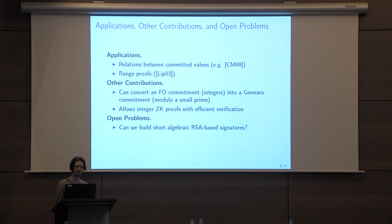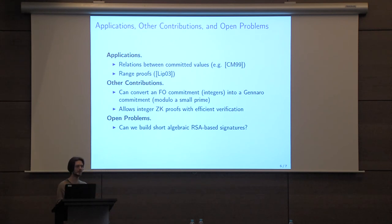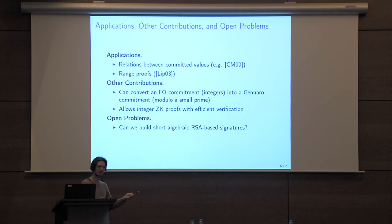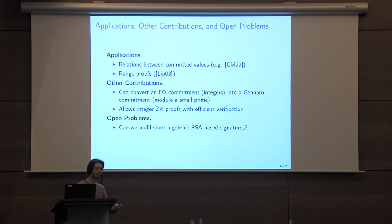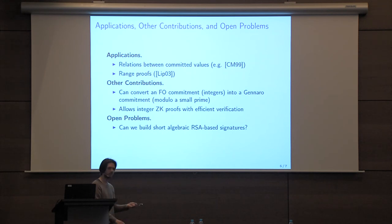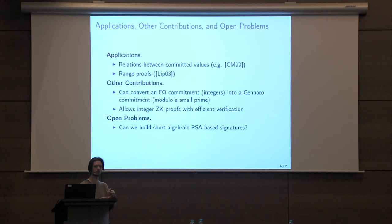The paper also contains a second, independent contribution focusing on the efficiency of zero-knowledge arguments over the integers. We show that we can convert a Fujisaki-Okamoto commitment — an integer commitment — into what we call a Gennaro commitment (first found in a paper by Gennaro), which is a commitment modulo a small prime. We use this inside a zero-knowledge argument of knowledge to reduce the size of the objects we work with. The prover is bound to values over the integers, but all verification is performed by the verifier modulo a small prime value. For the case of range proofs, the verifier's computation becomes about 10 times more efficient.